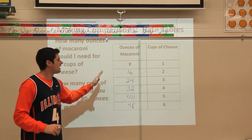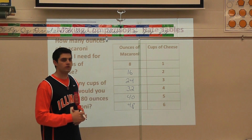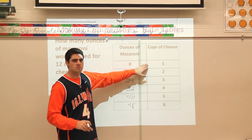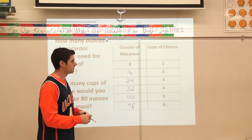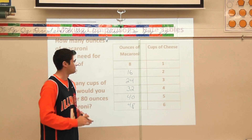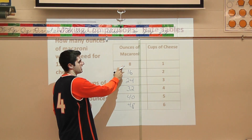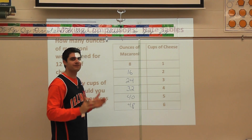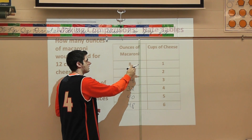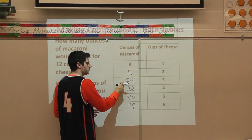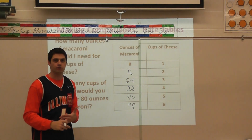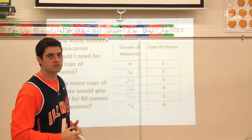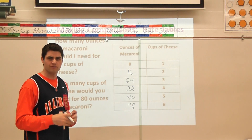I looked at my cups of cheese and ounces of macaroni. You might notice something different — I multiplied by eight, but you can also go in reverse. Going from ounces of macaroni to cups of cheese, you divide by eight. Eight divided by eight is one, 16 divided by eight is two, 24 divided by eight is three, and so on. You can work the table both ways — it's the reverse or inverse operation.